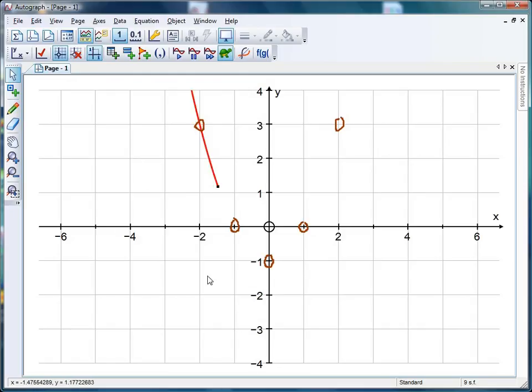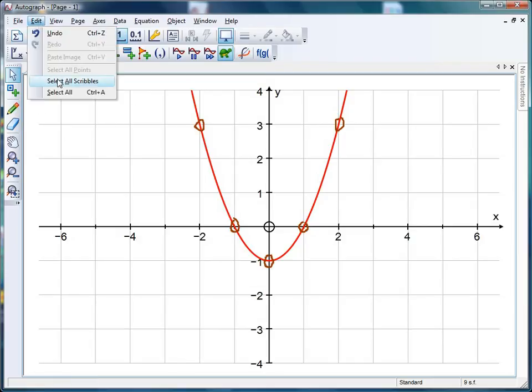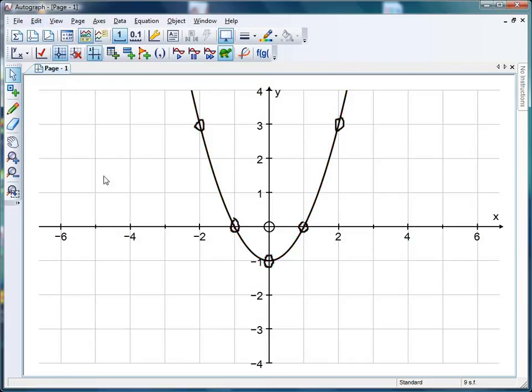As the little turtle is about to appear, fingers crossed it will go through all of those points. Nice! That's a simple way, and you can obviously do that with any graph, getting students to come up and plot the points and then check whether Autograph agrees with you.